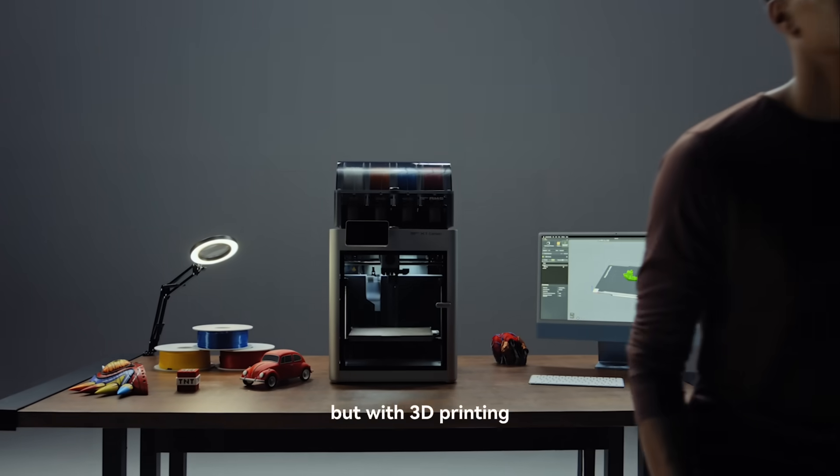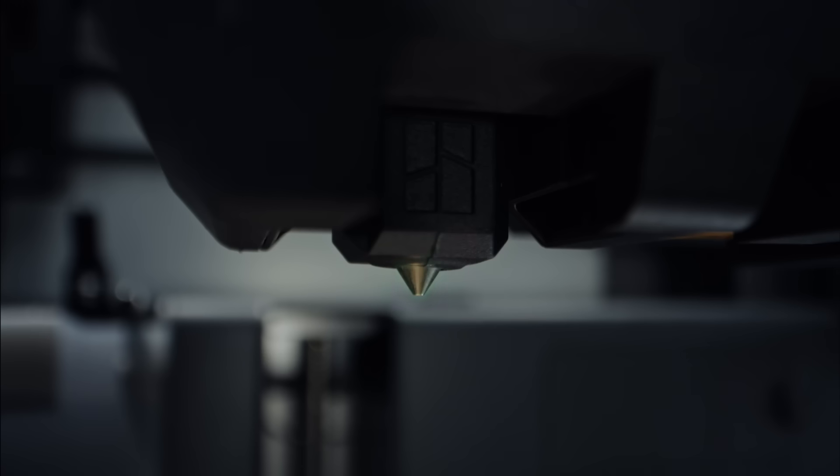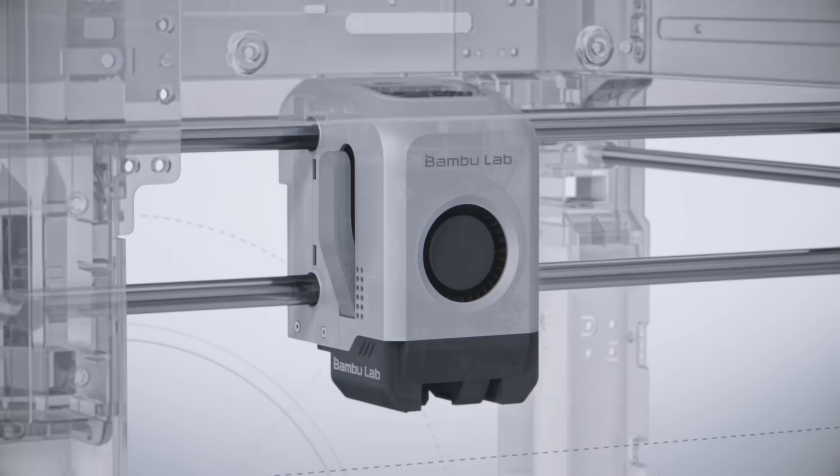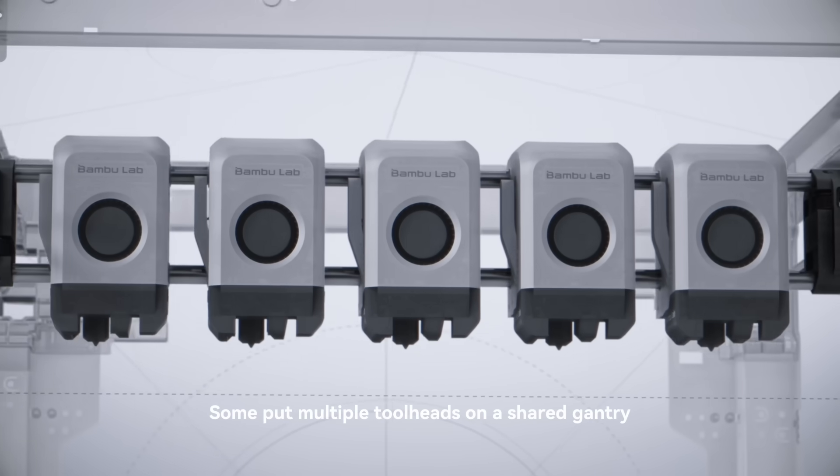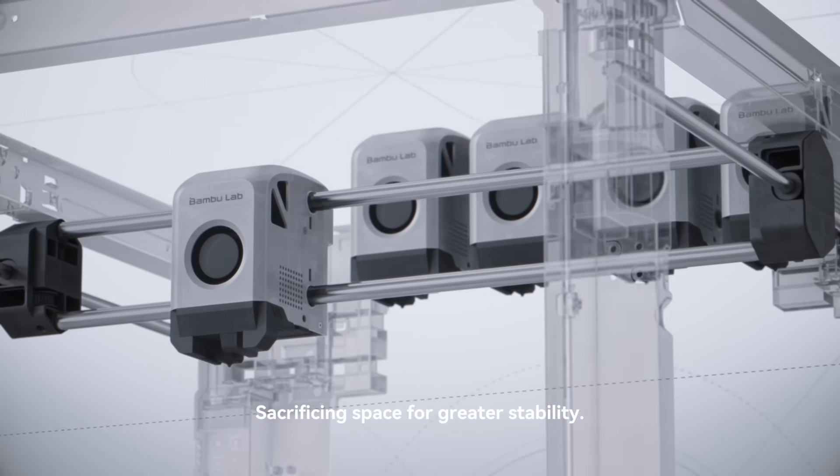Sounds simple, but with 3D printing, which part is equivalent to the brush? The nozzle? The toolhead? The entire gantry? Some put multiple toolheads on a shared gantry to avoid disconnections, sacrificing space for greater stability.